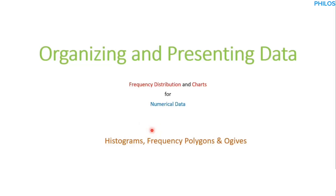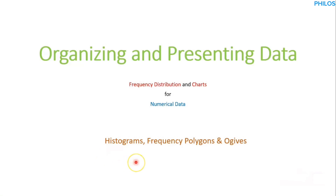Hi everyone, welcome back to our statistics tutorial series. In the last tutorial we learned how to find class boundaries, class midpoint, relative frequency, cumulative frequency, and cumulative relative frequency. But in this tutorial we are going to look at how to prepare a histogram, frequency polygon, and ogive. So without wasting much time, let's start first with the histogram.